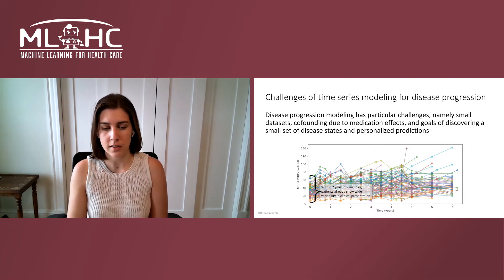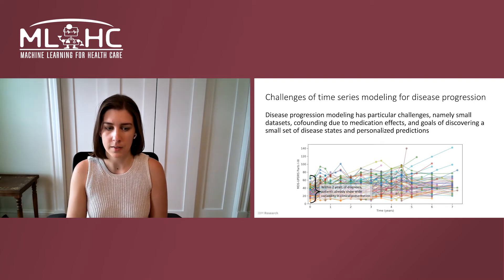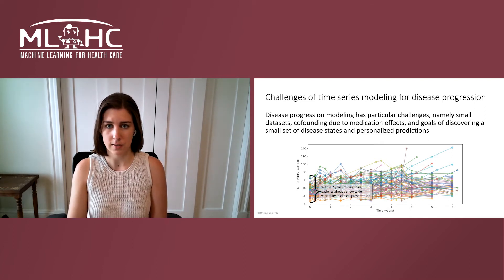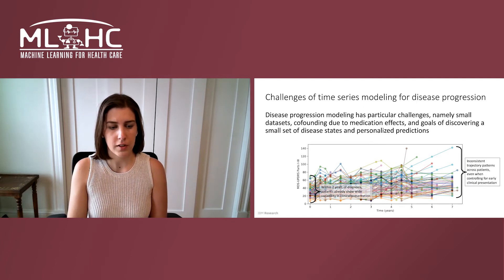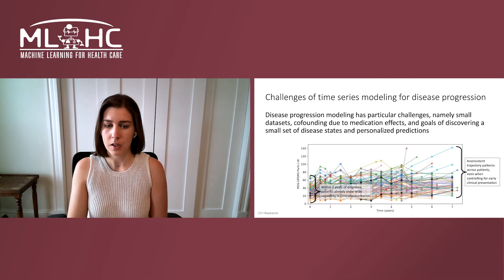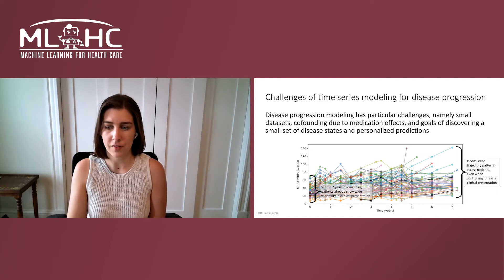First, this particular study has a rather stringent inclusion criteria of patients being within two years of diagnosis. However, even given this criteria, we see a wide variety of scores at the outset of the study. Furthermore, if we look at two patients who initially present rather similarly, we see that over time their disease trajectories diverge.